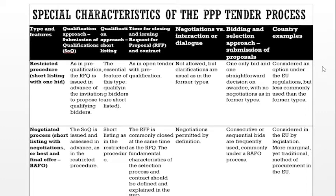Restricted procedure — shortlisting with one bid: qualification approach has submission of qualifications (SOQ) as in pre-qualification. The RFQ is issued in advance of the invitation to propose, qualifying bidders who are shortlisted. Time for closing and issuing the RFP and contracts is as in open tender with pre-qualifications. Negotiation is not allowed, but clarifications are usual. Only one bid and one straightforward decision on awardee with no negotiation. Considered an option under EU regulations but less commonly used.